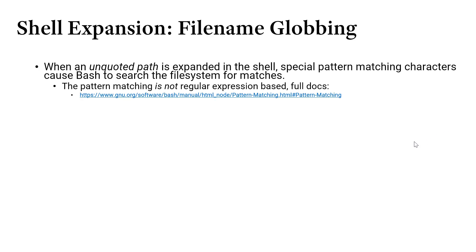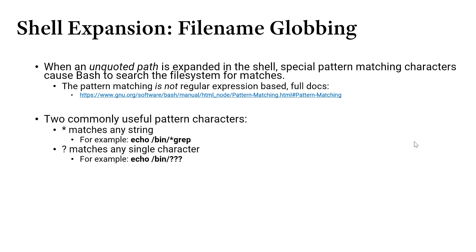The first expansion is filename globbing — a very commonly used and powerful expansion. The idea is that when you have an unquoted path, you can use special matching characters. You can't use filename globbing inside a quoted string. The most commonly used character is the asterisk, which matches any number of characters but does not match the directory separator. For example, echo /bin/*grep would match any program in the bin directory whose name ends with grep. The question mark in filename globbing matches any single character, so you can find programs with exactly three characters.